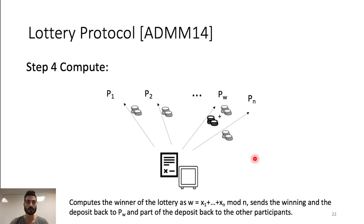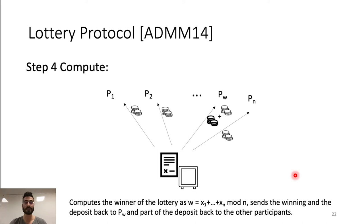In step 4, the compute phase, the winner of the lottery is computed as w, that is the sum of all the random strings modulo the number of players. The winnings and the deposit are sent back to the winner pw. Moreover, part of the deposit is also sent back to the other participants. A property called fairness with penalties can be ensured by this protocol, because if some player didn't correctly open their random string in the open phase, then in the last phase, players that didn't open before are going to be financially punished.